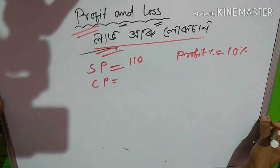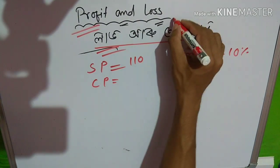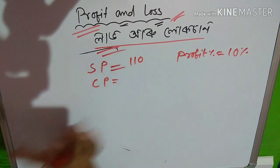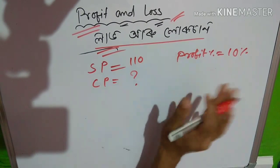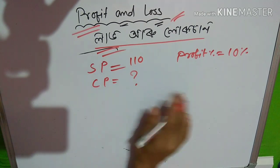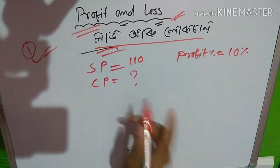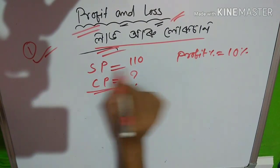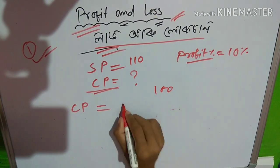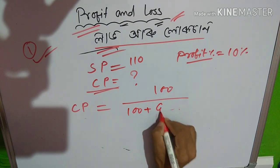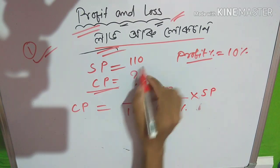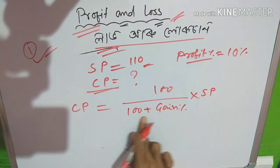If you have time, you can see this method. I will show you the video. Now we have shortcut tips. This is a shortcut formula. You can use it in 30 seconds. This formula is the profit percentage. The formula is 100 divided by 100 plus gain percentage. Gain percentage is the profit percentage. This is the selling price.